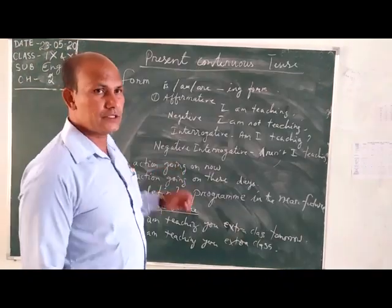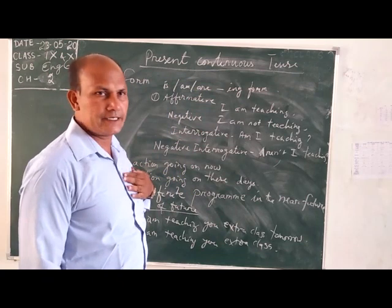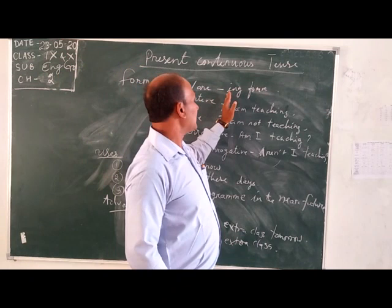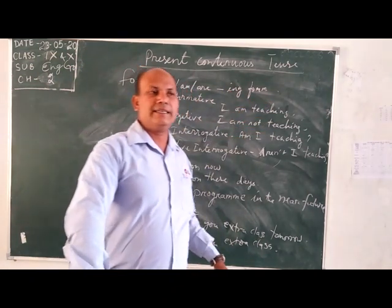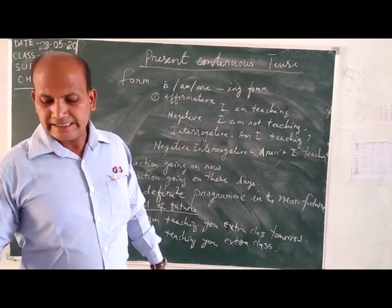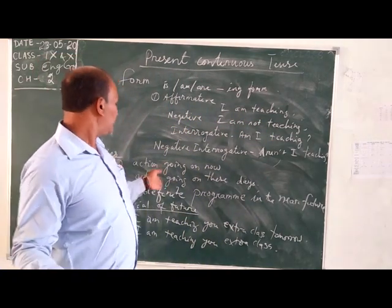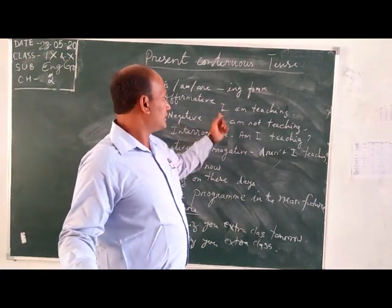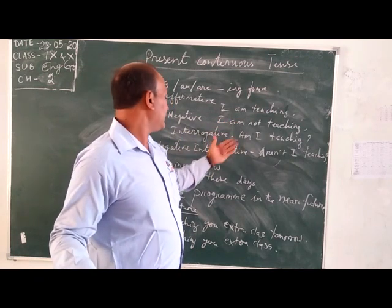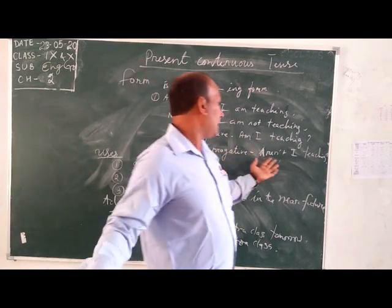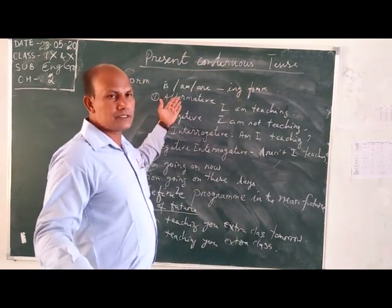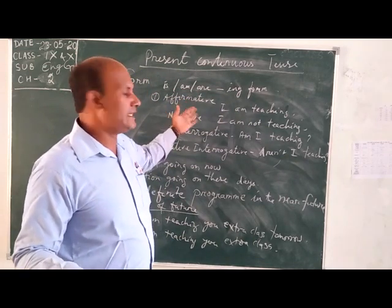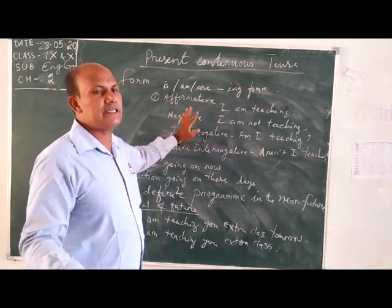Now let's discuss present continuous tense. Its form is: IS/AM/ARE plus the -ING form of the verb. So that is present continuous. It also has different types — just like 'I am teaching' (positive), 'I am not teaching' (negative), 'Am I teaching?' (interrogative). You can use first person, second person, or third person subjects to make different types of sentences.